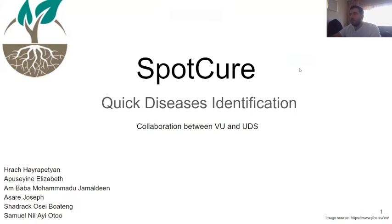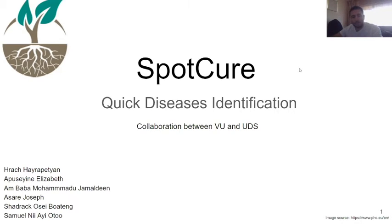Thank you to the chair, Anna, for introducing us. Our project name is SpotCure, and the main issue we're trying to solve is quickly identifying diseases — detecting what is happening with crops. This is a collaboration between UFA and UDS.